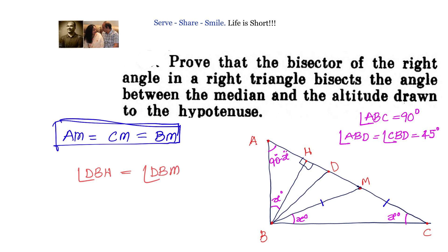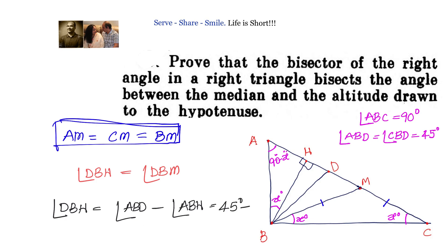Let us find angle DBH. Angle DBH equals angle ABD minus angle ABH, which equals 45 degrees minus x degrees.